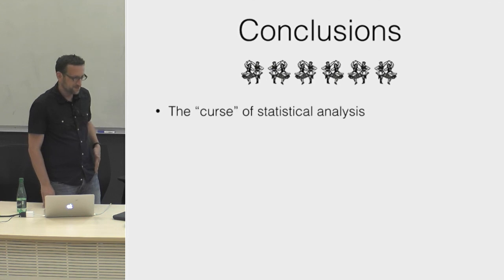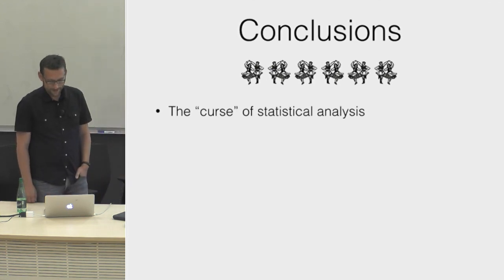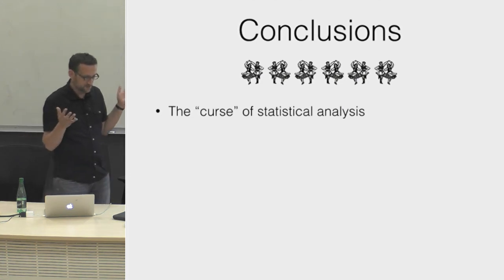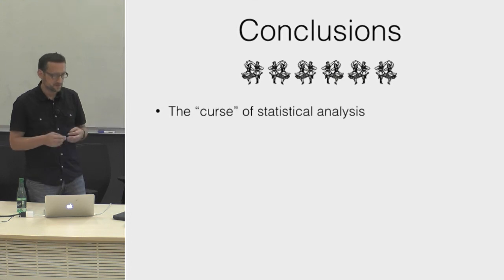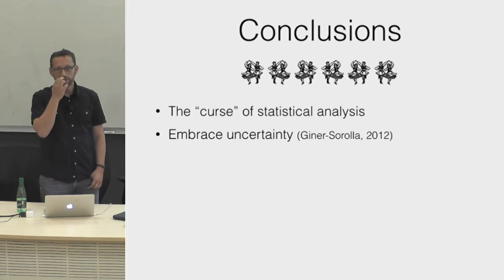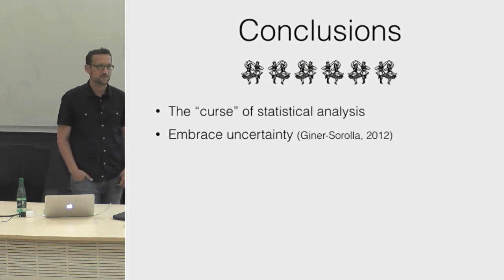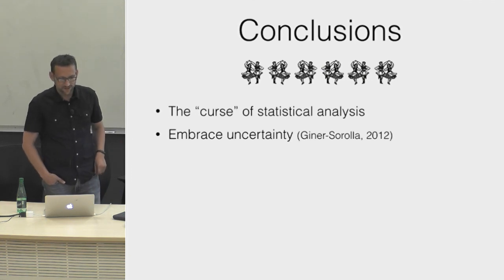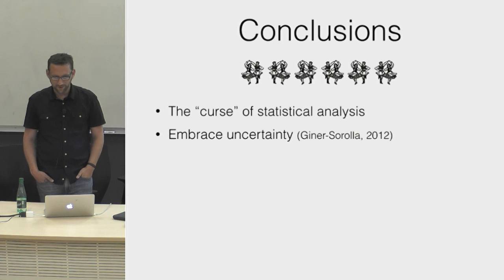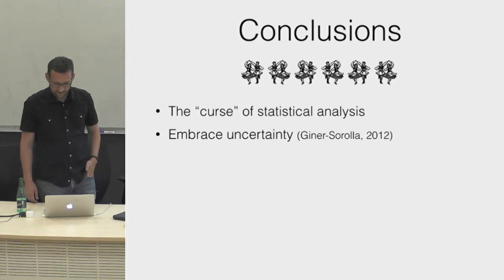In conclusion, the picture may seem depressing — there is a sort of curse of statistics in that no matter what analysis you use, you will never get certainty, for the same reason that you never get certainty with sampling means: sampling variability, or more generally statistical error. But the solution is to embrace uncertainty — try to understand it as best we can and communicate it as best we can in our papers. Try not to hide the uncertainty and messiness of the data.